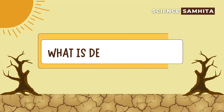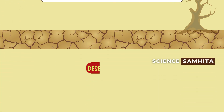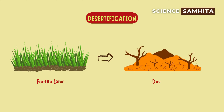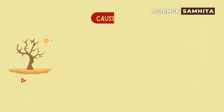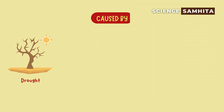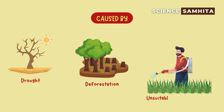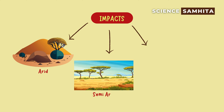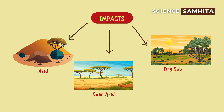What exactly is desertification? Desertification is the transformation of fertile land into desert, often caused by drought, deforestation, or unsuitable farming practices. It mainly impacts arid, semi-arid, and dry subhumid regions. This degradation of land reduces its productivity, rendering it unable to sustain life.